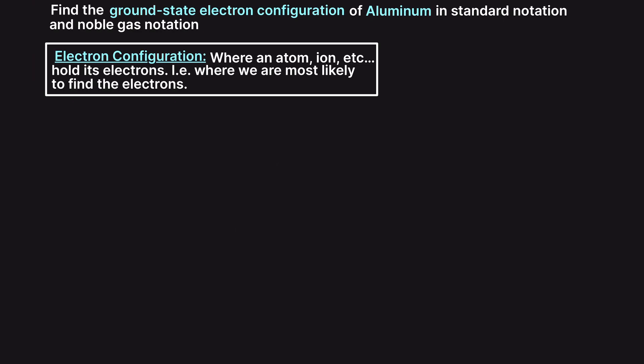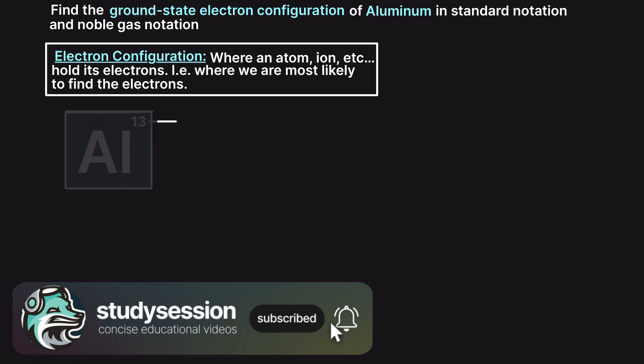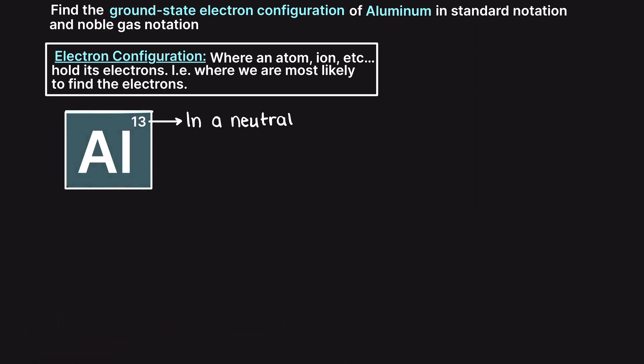To solve this, the first thing we need to do is look at our periodic table, and we are going to look at how many electrons an aluminum atom actually has in its ground or unexcited state. Looking this up, we can see that aluminum is number 13 on the periodic table, meaning that in a neutral state — no positive or negative charge — our aluminum atom will have 13 protons in its nucleus and thus 13 electrons surrounding that nucleus to maintain the neutral charge.